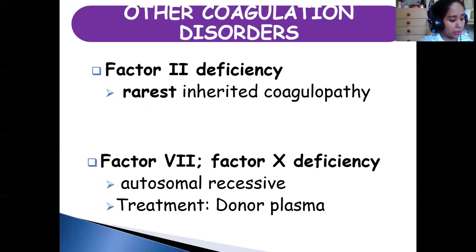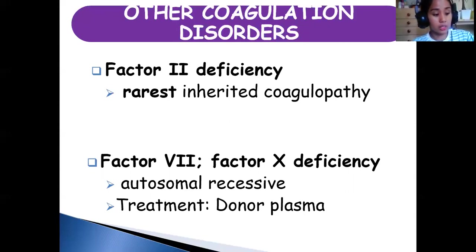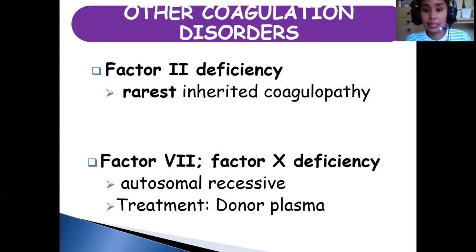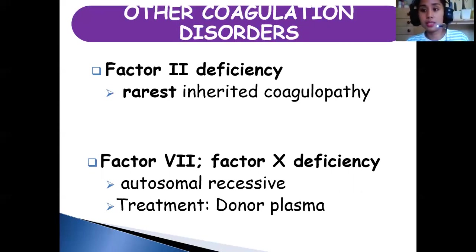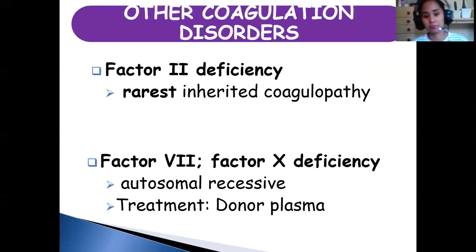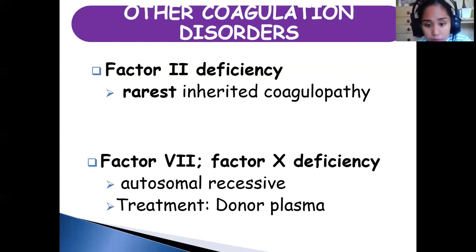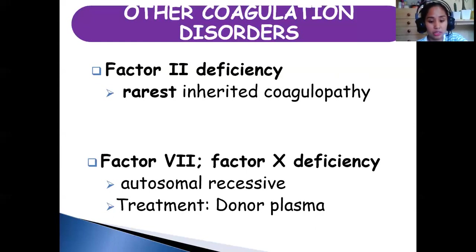Moving on to other factor deficiencies: factor 2 (prothrombin) deficiency is the rarest inherited coagulopathy according to Henry. Factor 7 and factor 10 deficiency are also listed. Factor 7 can be affected by vitamin K, as can factor 10. These are important to remember for board exam questions asking about rarest, most common, or most severe conditions.